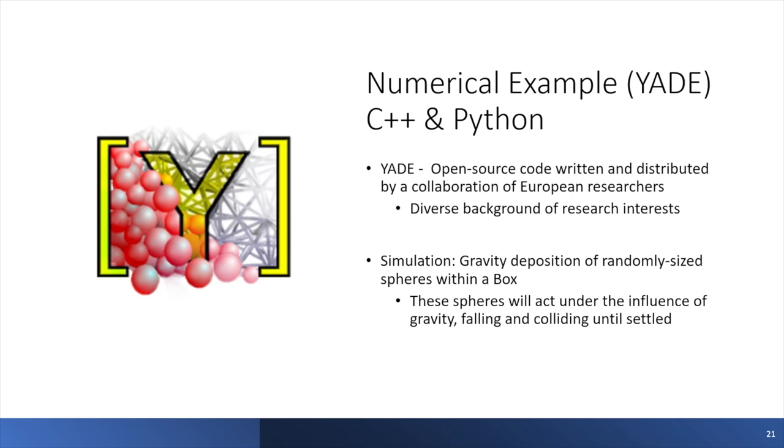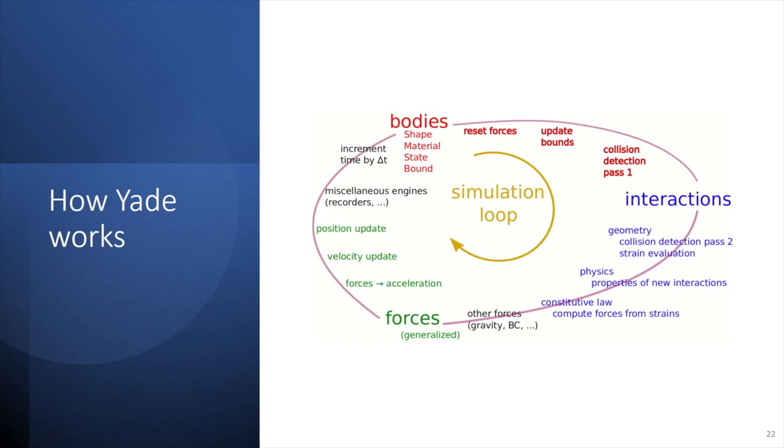YADE is an open source software compatible with Linux, and it's written in the C++ and Python languages. It came about as a collaborative effort between several European researchers from different backgrounds. Their diverse expertise has resulted in a code that could be adapted for many purposes. To visualize a numerically simulated DEM analysis, I'm going to walk us through a code that sets up a simulation that generates a number of randomly-sized spheres within a bounding box and then allows them to deposit or settle under the influence of gravity.